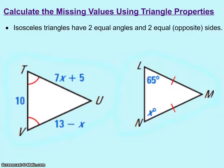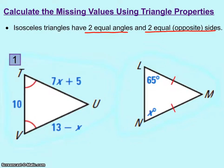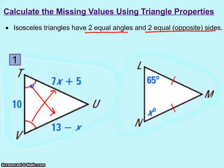Now we will be talking about isosceles triangles in this third slide — the fact that isosceles triangles have two equal angles and two equal opposite sides. In example number one, we have a triangle given with two equal angles. When those angles are equal, the sides opposite those angles will also be equal. So in this case, we will be taking 7x plus 5 and equaling it to 13 minus x.